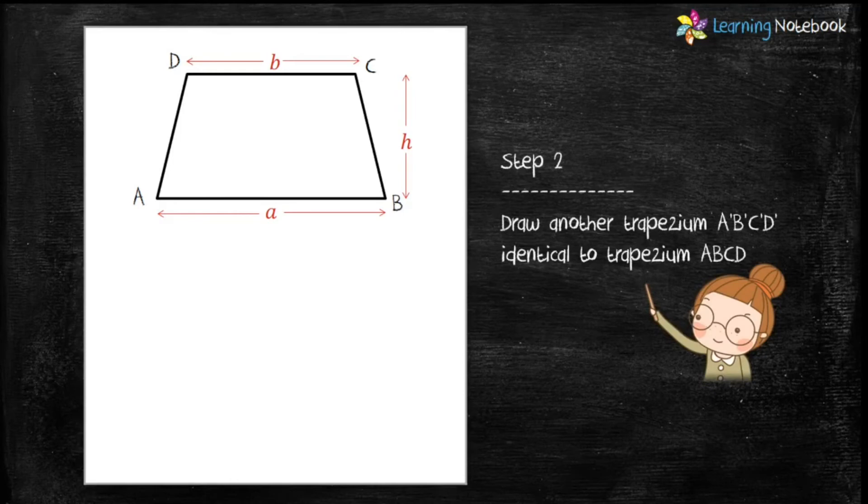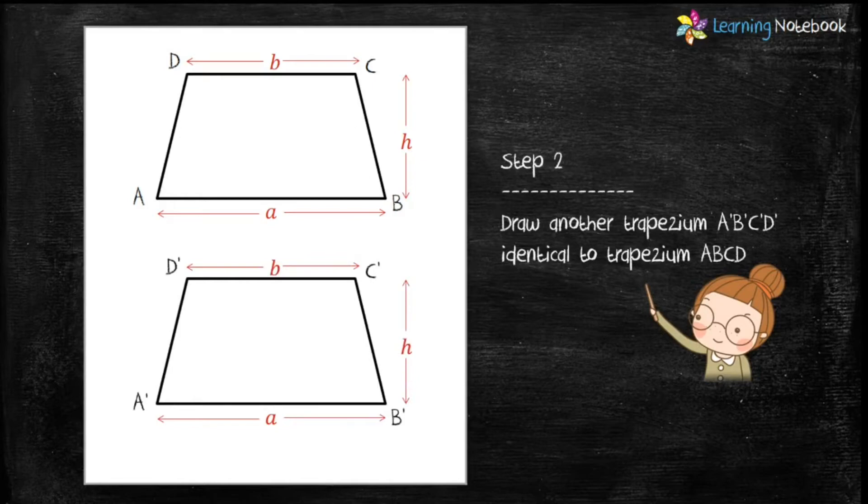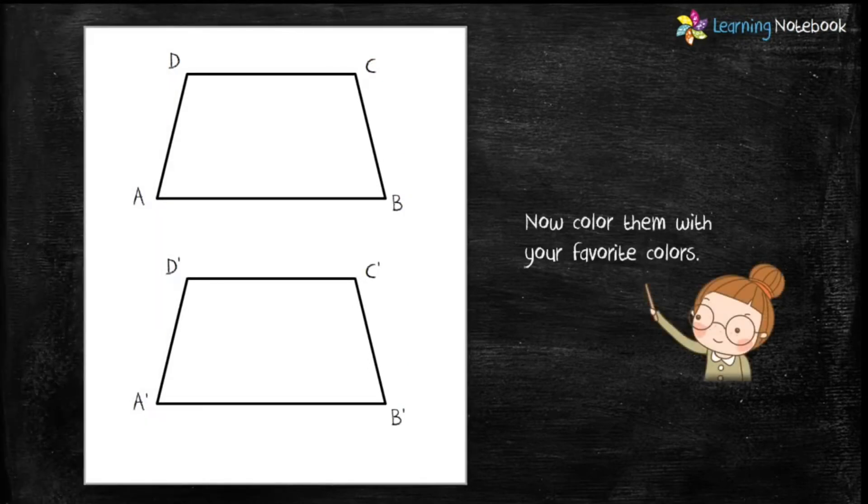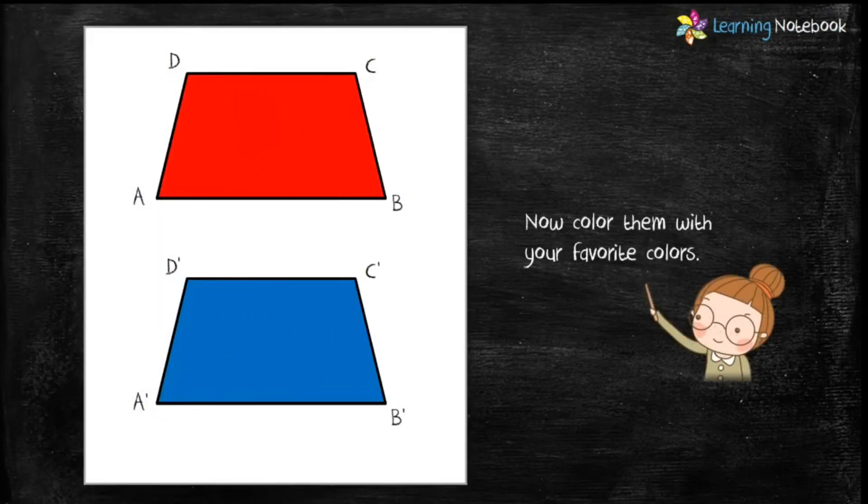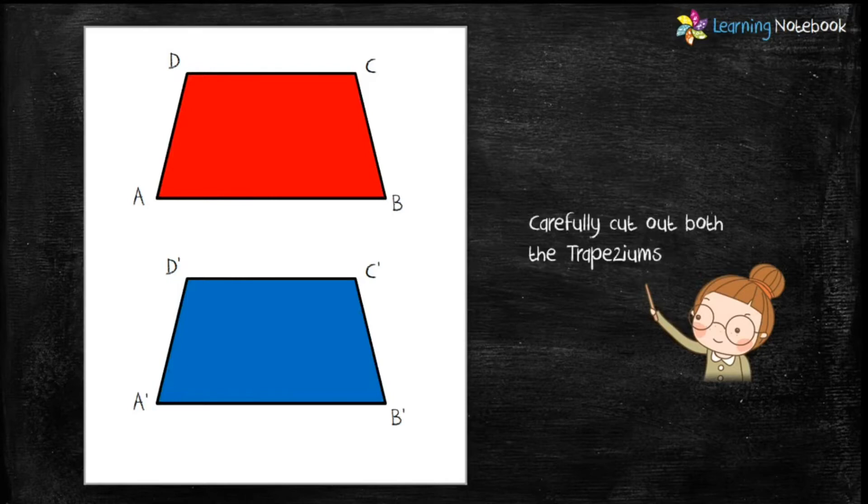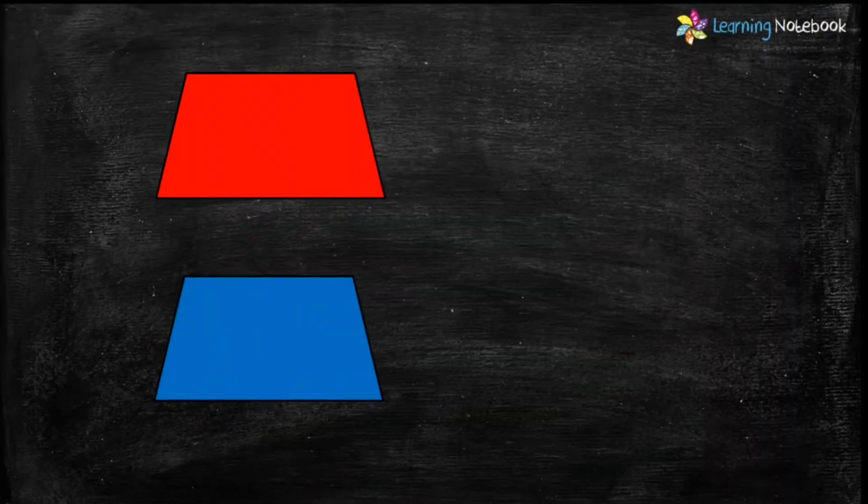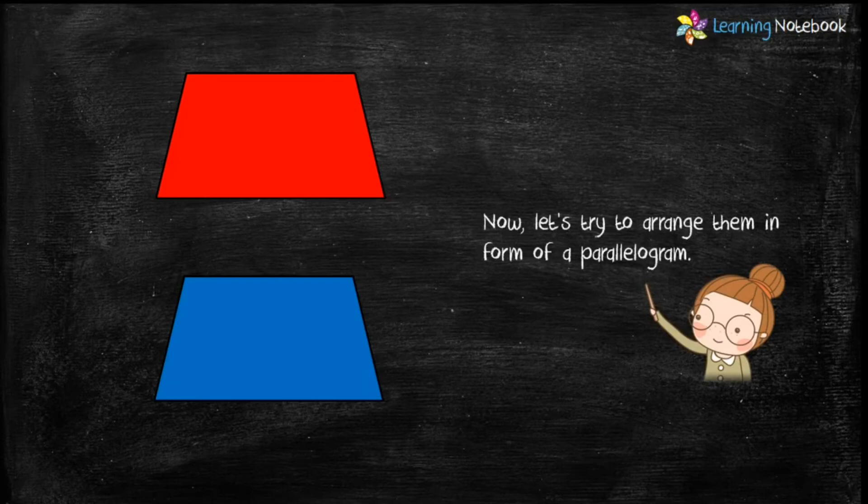Step 2: Draw another trapezium A'B'C'D' identical to trapezium ABCD. Now color both trapeziums with different colors. Then, with the help of scissors, carefully cut out both trapeziums. After cutting, you will get two identical trapeziums as shown here.